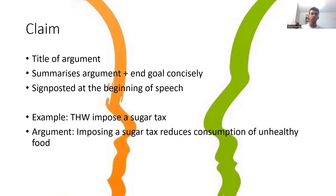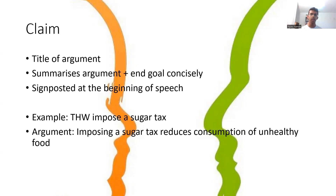So if you have three arguments, you'll say something along the lines of 'I'll be giving three arguments within my speech. Firstly, the car industry is going to benefit greatly. Secondly, yada yada, and so on.' The second time your claim comes up is when you actually get to the argument within the contents of your speech. So maybe after a minute of rebuttal, you want to remind the judge what topic you're going to be talking about. We can use the example of the sugar tax — the claim would be that imposing a sugar tax reduces the consumption of unhealthy food. It's quite straightforward, one sentence, and it gets the point across.